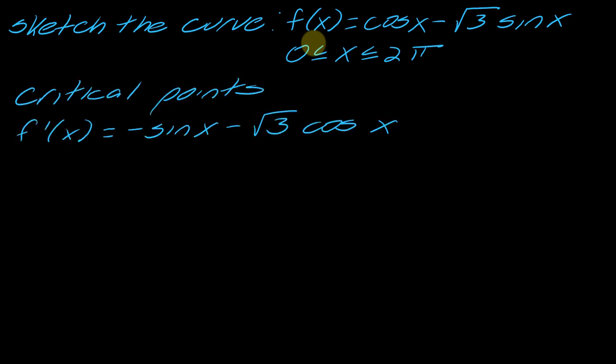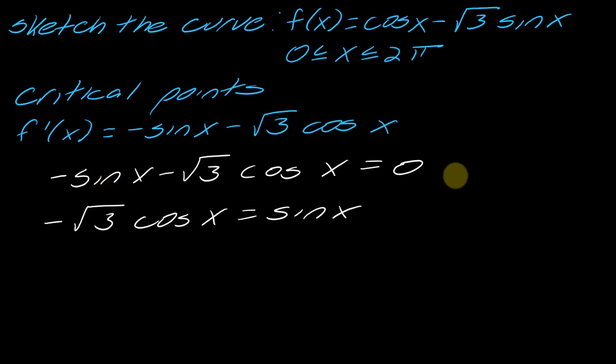First, I need to find the critical points. There are going to be no places where this is undefined, so I just have to set this equal to zero and solve. I'm going to isolate the negative square root of three. I'll bring the sin(x) over, and then divide both sides by cos(x). So ultimately, I'm going to get -√3 = sin(x)/cos(x), i.e., -√3 = tan(x).